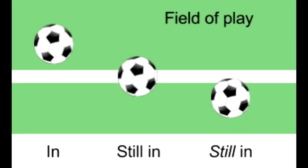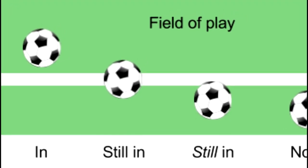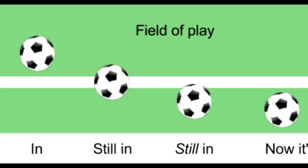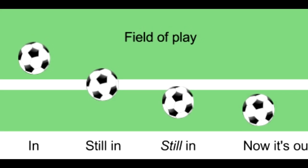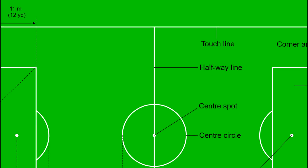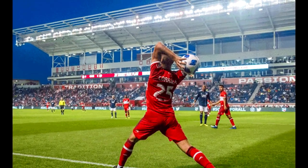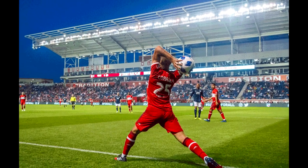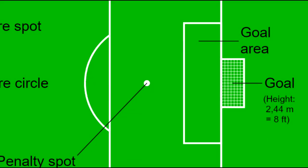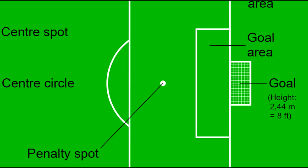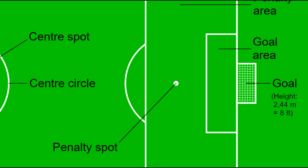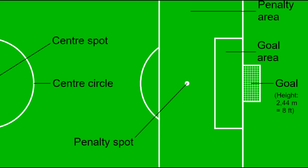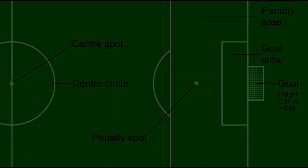Should the ball go out of bounds, the ball will be thrown or kicked back into play depending on where it exited the field and who touched it last. Should the ball go out one of the sides of the field without a goal, a player from the team that did not touch it last will be allowed to throw the ball back onto the field. Should the ball go out one of the sides of the field with a goal, known as the goal line, how the ball returns to the field depends on which team touched it last.